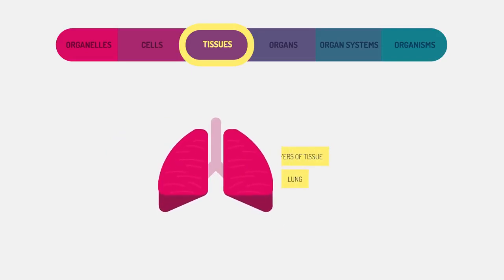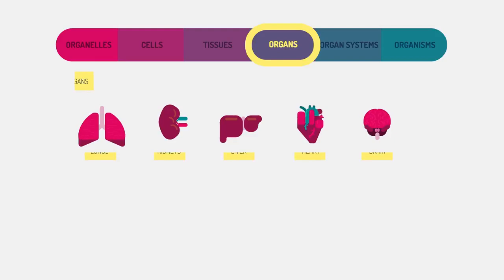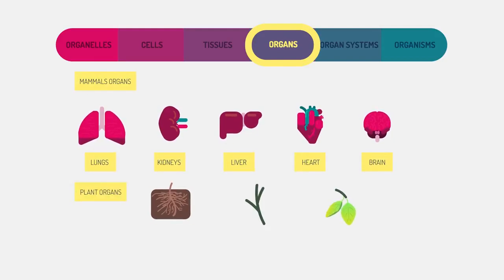When there are layers of tissue working together, they form an organ. Organs are specialized to carry out specific life processes. All animals contain organs. In fact, mammals have five vital organs that they cannot live without: lungs, kidneys, liver, heart, and brain.